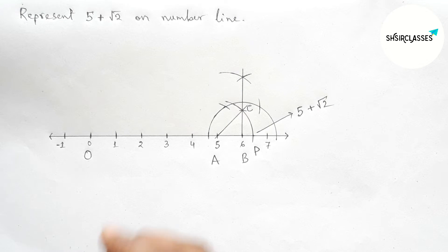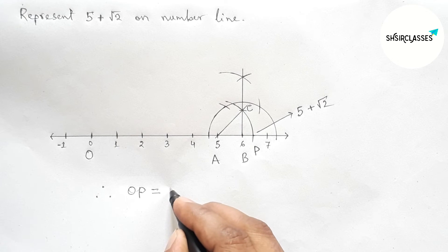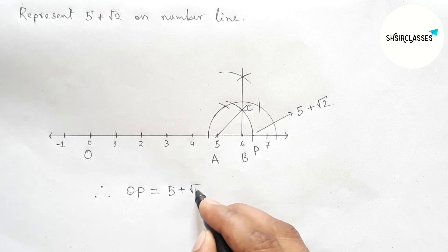So here P represents 5 plus root 2 on number line. Therefore OP is equal to 5 plus root 2.